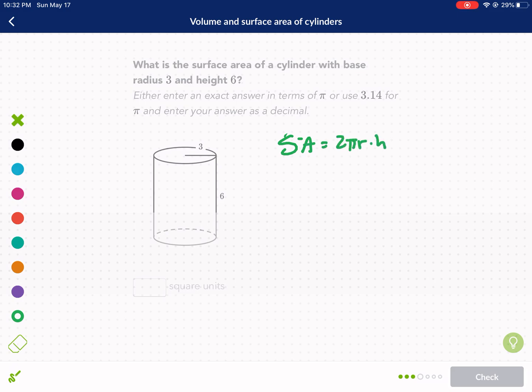And then we need to add two of the bases. Let's start with our bases. Our base is going to be πr². Yep, that's going to be our base when we multiply that by 2. So we have π times 3 squared, that's going to be 9π, we multiply that by 2.